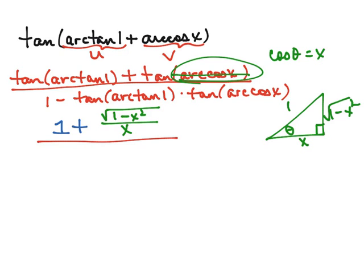This is divided by 1 minus — we found the tangent of the arctangent of 1 to be 1, and we found the tangent of the arccosine of x to be the square root of 1 minus x squared over x.